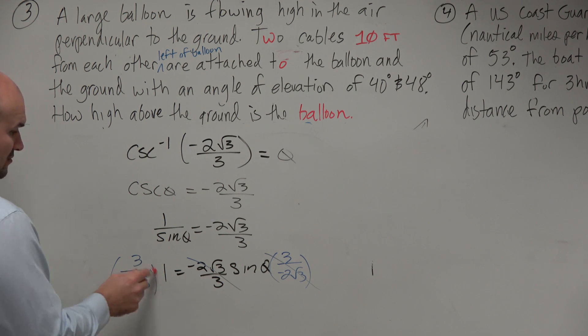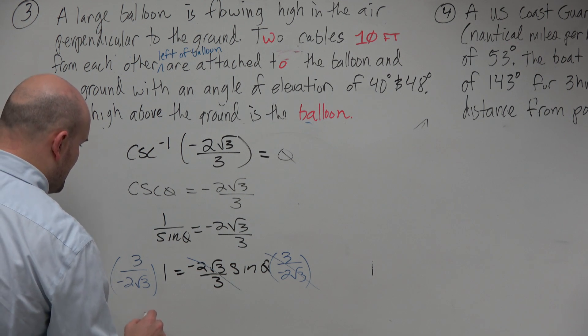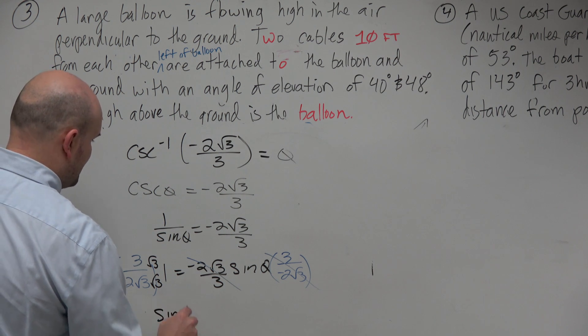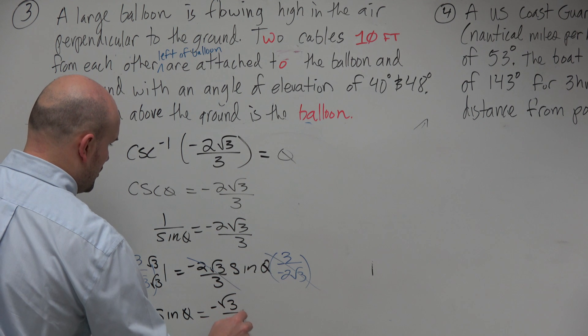Now could we rationalize the denominator there? We could, very much so. And if we rationalize, let's just write this out. So if we multiply by square root of 3 over square root of 3, that becomes 3. Those 3's would divide out. You're left with square root of 3 over negative 2. So I have sine of theta equals negative square root of 3 over 2.